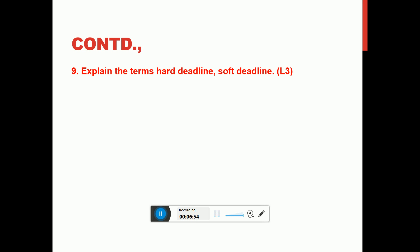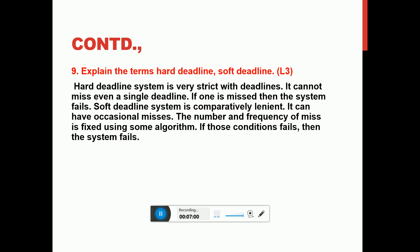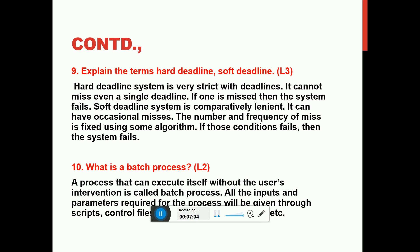Explain the terms hard deadline and soft deadline. If I'm applying brake, it should stop immediately. Otherwise it will kill people. It is called hard deadline. Soft deadline—I'm typing something, it may display in the screen after half a minute. It is not going to kill anybody. So this is soft deadline. When the deadlines are very much critical for a life to be saved or very much critical for some operation to be done, we call it hard deadline.